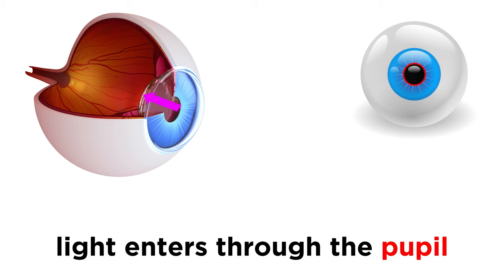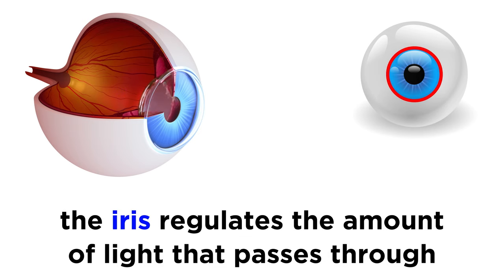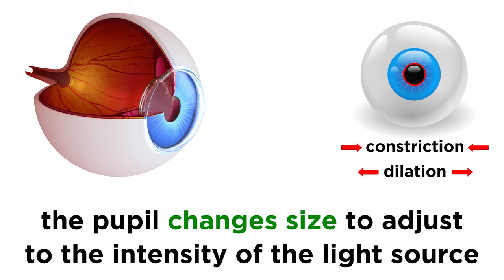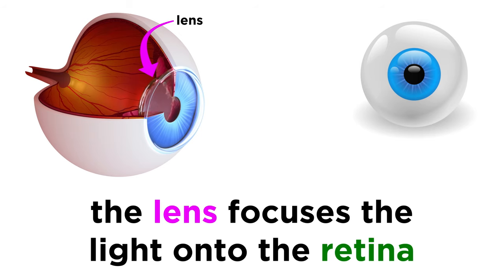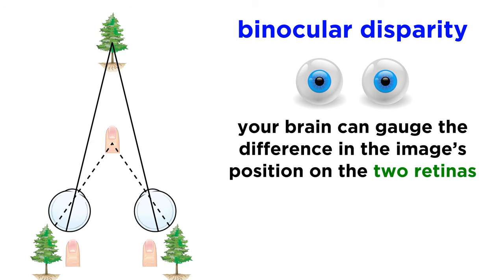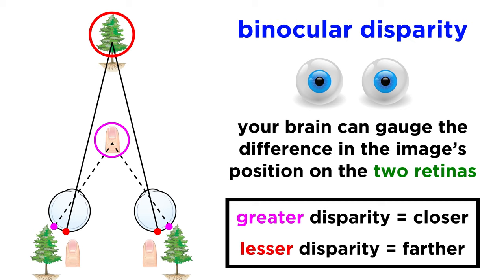Light passes through the pupil to enter the eye. The iris, or the colored part surrounding the pupil, regulates the amount of light that passes through. This can be seen when the pupil changes size to adjust to the intensity of available light, which we call constriction if it gets smaller, and dilation if it gets bigger. Behind the pupil sits the lens, which focuses the light onto the retina. We do this with two eyes at once, and the brain is able to interpret the binocular disparity — the difference in the position of a particular image on the two retinas. The greater the disparity, the closer the object is, so having two eyes is what gives us our depth perception.